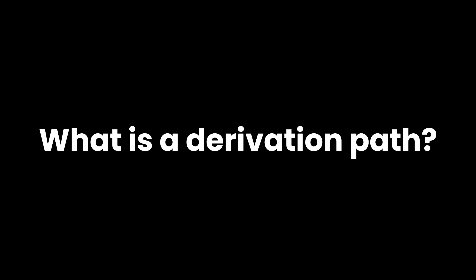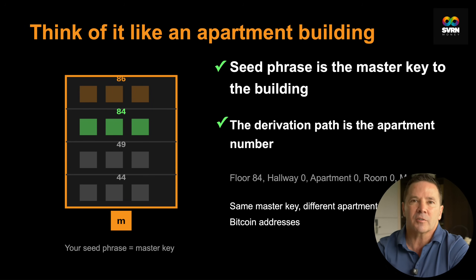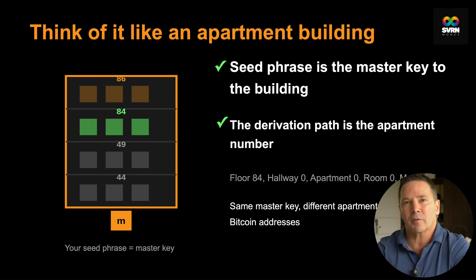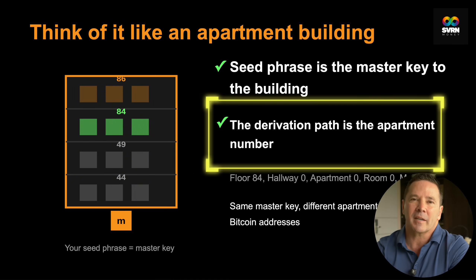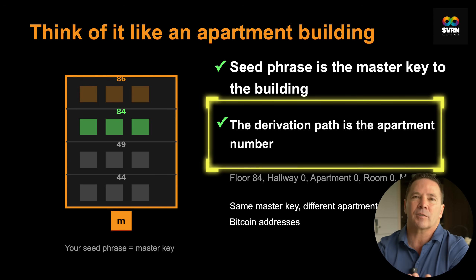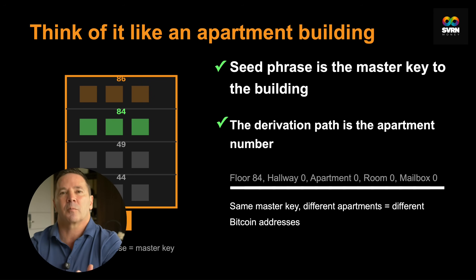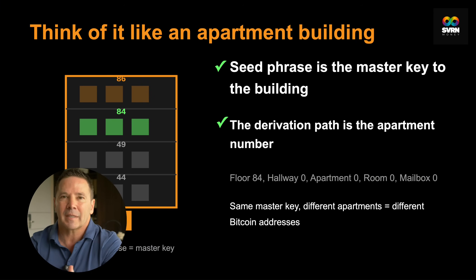So what exactly is a derivation path, and more importantly, when do you need to even care about it? Think of it like this: your seed phrase is like the master key to a massive apartment building with billions of apartments. That building has different floors, different hallways, different apartments with different mailboxes. The derivation path is just the specific instructions for which apartment you're actually trying to get to — floor 84, hallway zero, apartment two, room zero, mailbox one, for example.